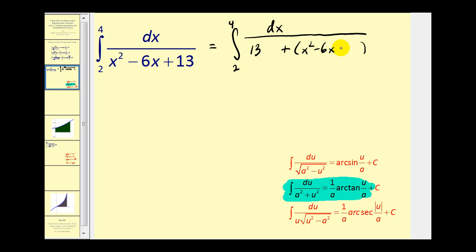Negative 3 squared would be positive 9, so we're going to add 9 here. But if we add 9 here we have to undo that, which means we also have to subtract 9. So we'll subtract 9 from the 13.